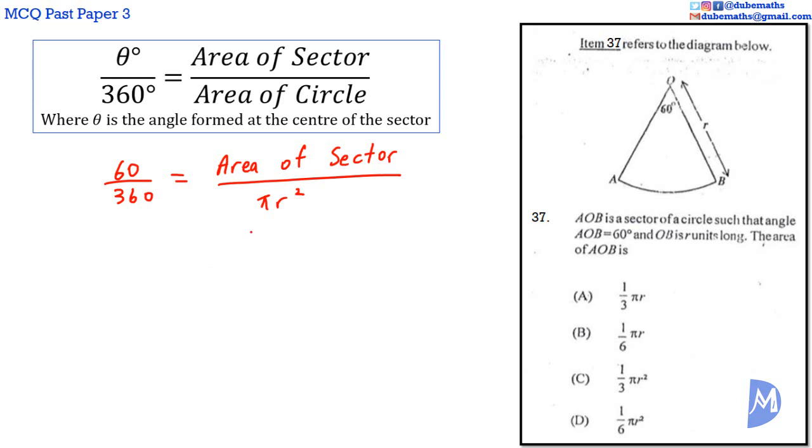Making area of sector the subject of the formula, we are going to multiply both sides by pi r squared. We get 60 over 360, multiplied by pi r squared. When we multiply pi r squared on the right hand side, the pi r squared would cancel to remain with only area of sector. We have area of sector is equal to 1/6 pi r squared. The answer is D.